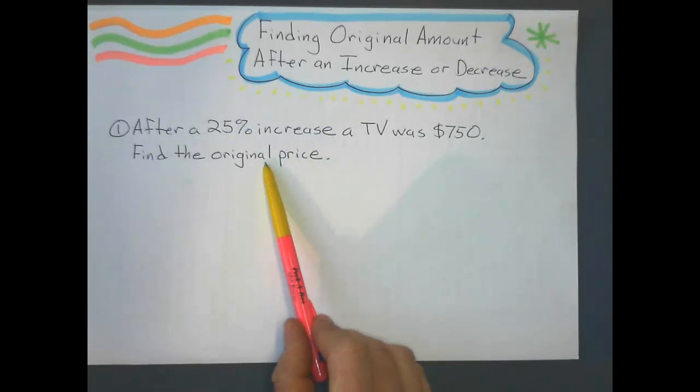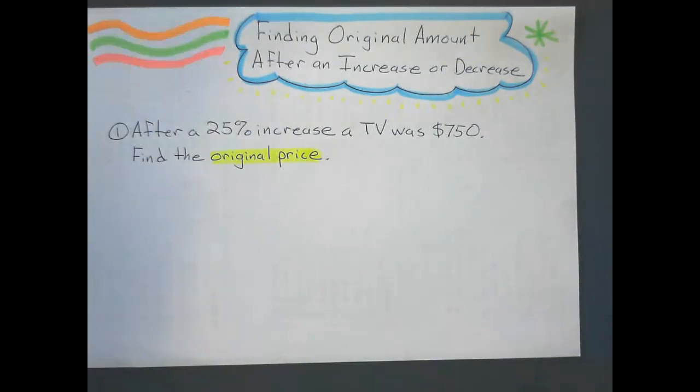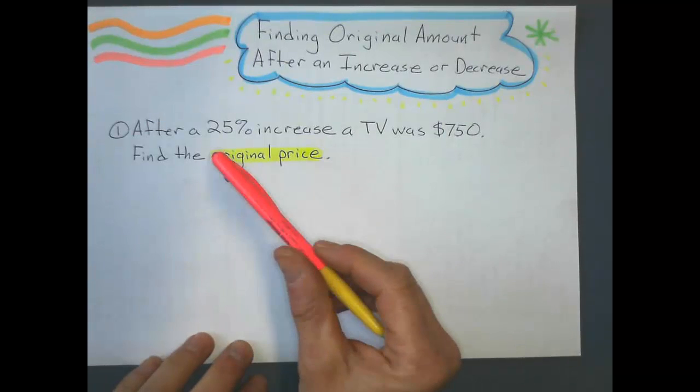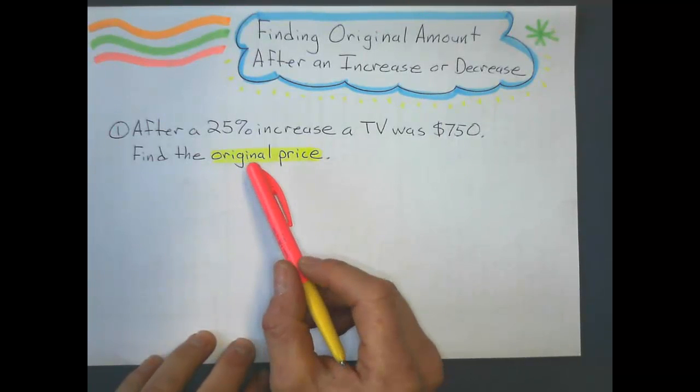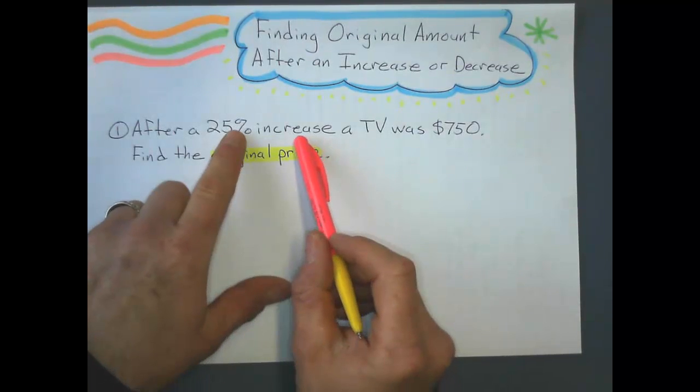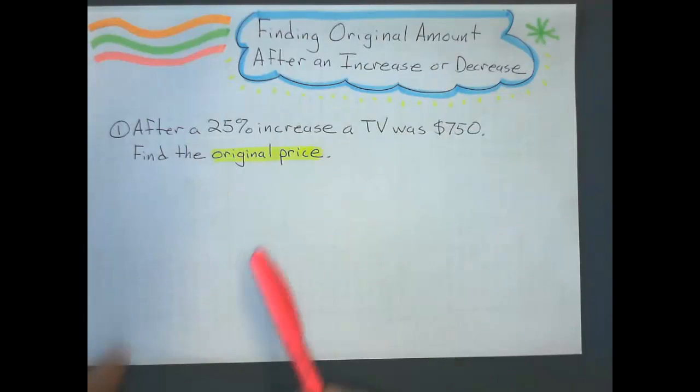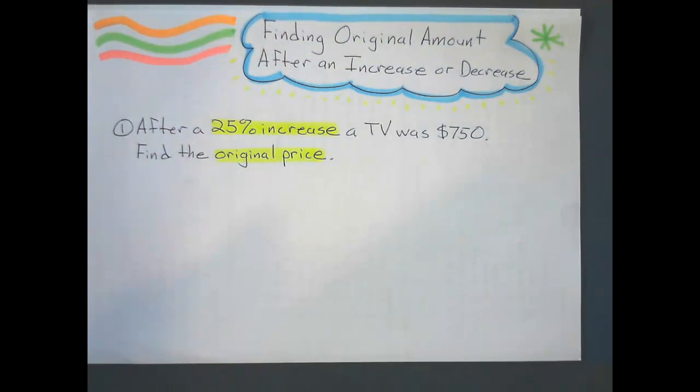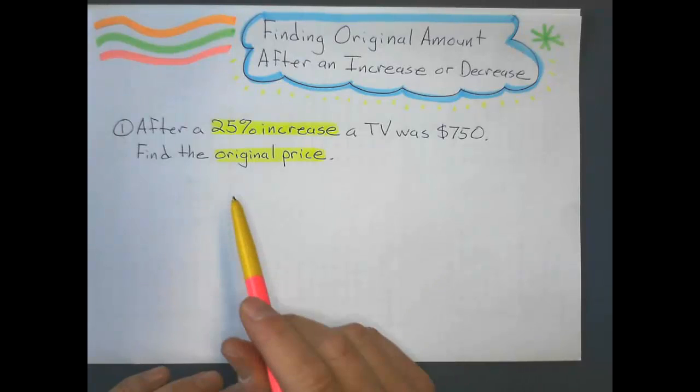Number one is original price. Original price tells me that I'm going to be using division to solve this. I'm going to be dividing to solve. I also have this one up here, a 25% increase. Now those are the two bits of information that I need to solve this. And if I want to find the original price,